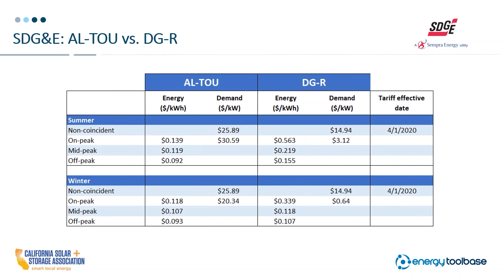So very high demand charges and what I would classify as pretty mild energy charges — in the summer anywhere between maybe about $0.09 and $0.14. When you rate switch and move your customer to the DGR rate post-solar or post-solar and storage, basically what happens is the demand charges go down really significantly. The trade-off is the energy charges go up. That's how the utility is recovering costs — instead of doing it through demand, they're doing it through energy. This is going to be really important to keep in mind when we look at case studies.